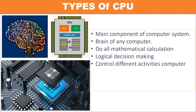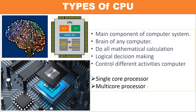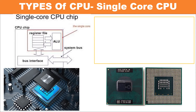The CPU or processor can be manufactured using different technologies, such as single core processor and multi-core processor. In this video, we will talk about the different types of CPU. So let's get started.